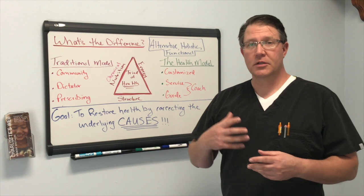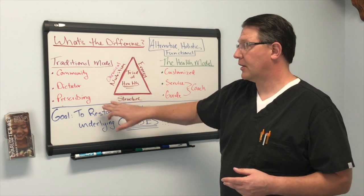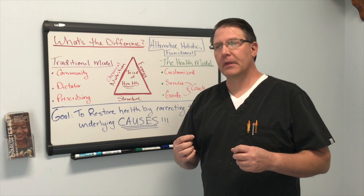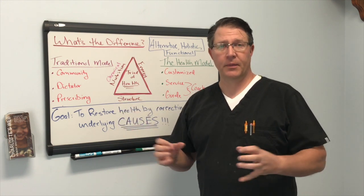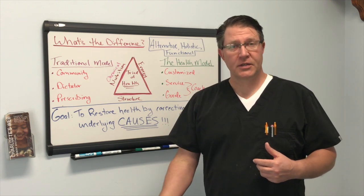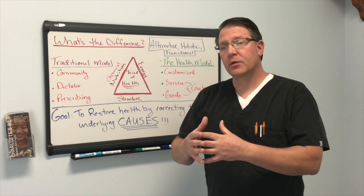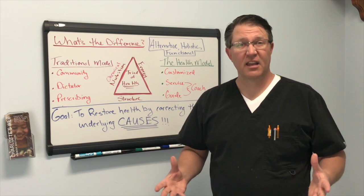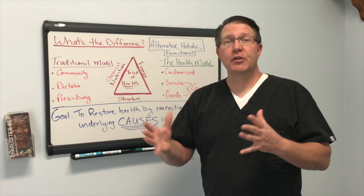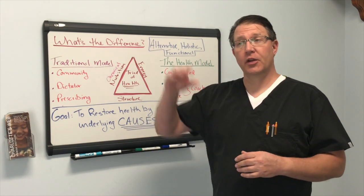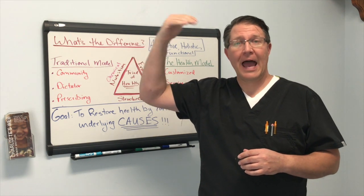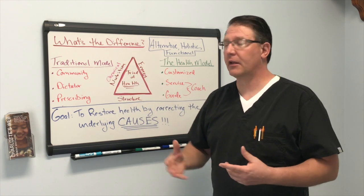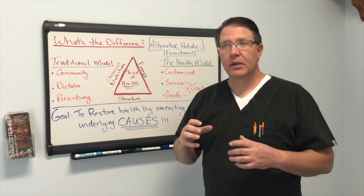Three words that can describe the conventional model are community, dictator, and prescribing. In traditional healthcare, the healthcare system is really looking at the community of people. For example, when people go and have blood tests done and they get their cholesterol or thyroid looked at, those labs are looking at a community of people. If you have a community of people that overall is pretty sick or their health is declining, the averages of those labs are going to look much worse than a community that's fairly healthy and very active in wellness.